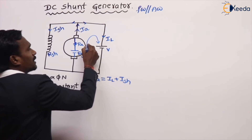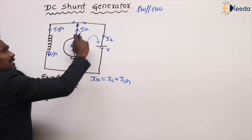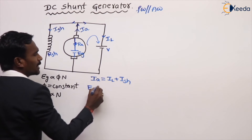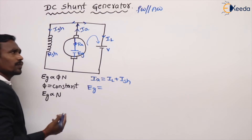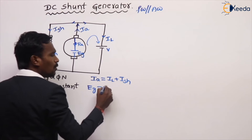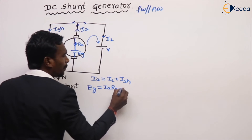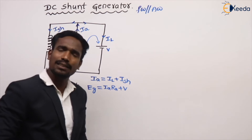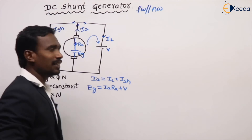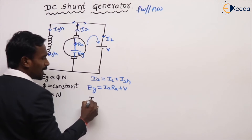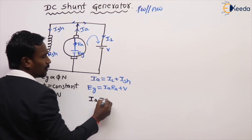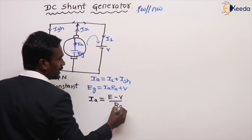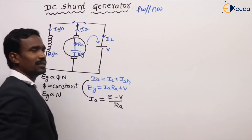What is the voltage equation? Writing the loop equation: EG = IA × RA + V. The value is the same as a separately excited generator. And from this, the armature current IA = (EG − V) / RA. This is also the same as before.